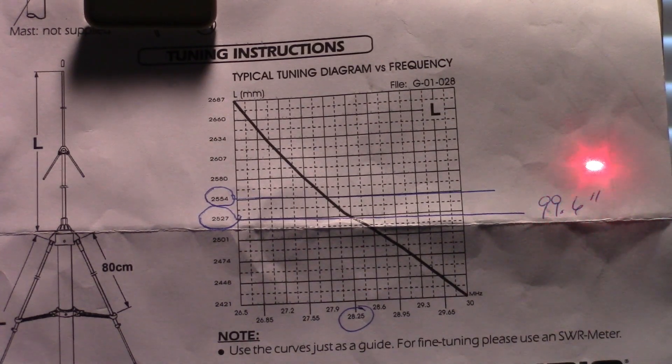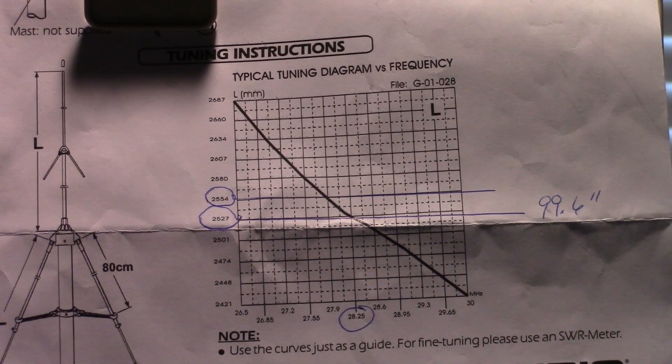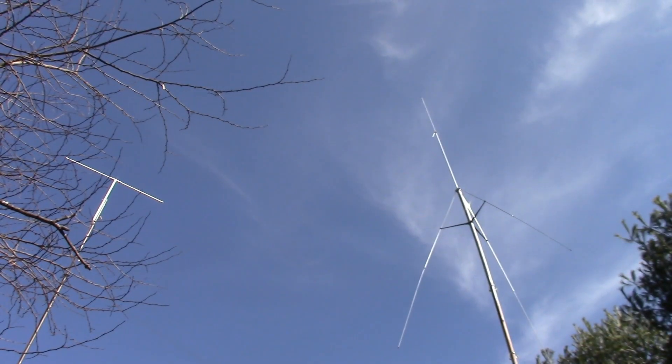So this is part three, final part of the three-part series of episode 12 on the assembly of the Starduster M400 antenna for CB, and you could also use this on 10 meters amateur radio. This is Buzz Stone.